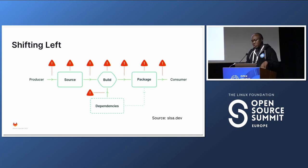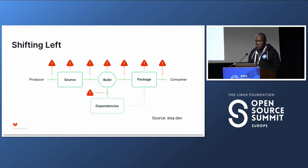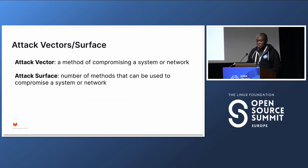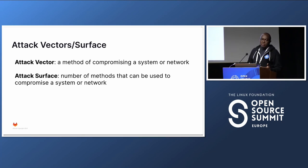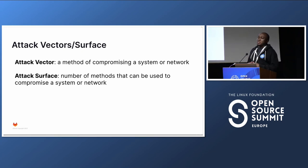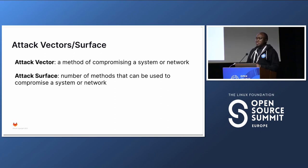Ensuring that the whole entire software development lifecycle is secure is part of having zero trust across the organization. Now let's understand two terms: attack vectors — these are ways or methods in which systems can be compromised or vulnerabilities can be introduced into an application, and this can come in various forms.